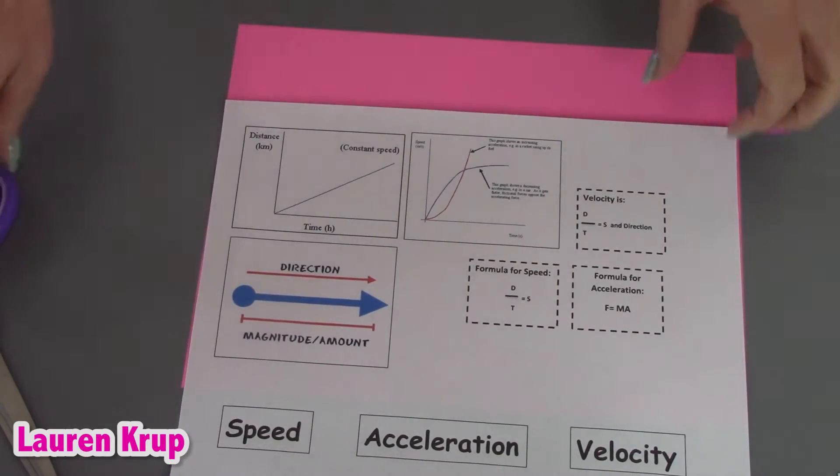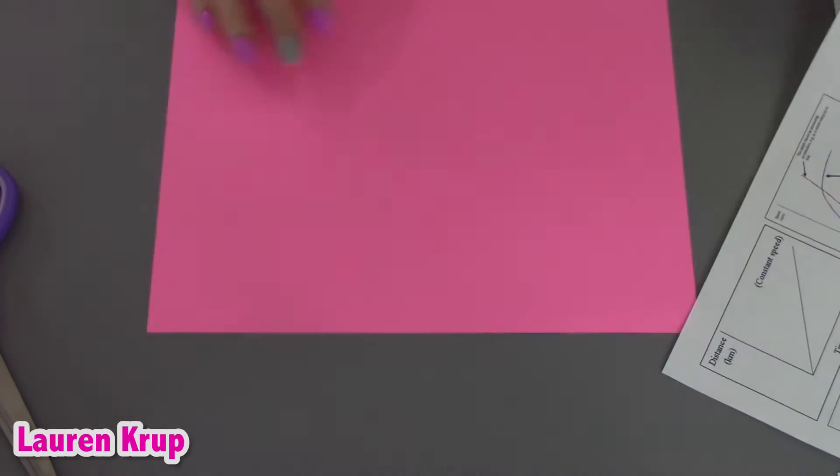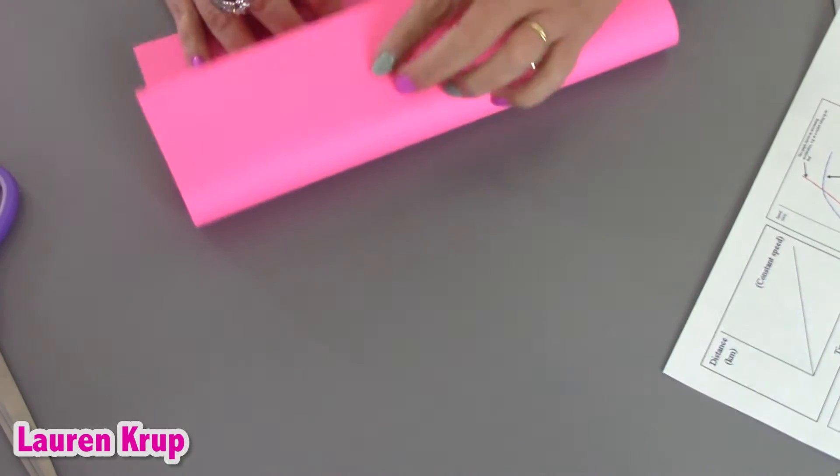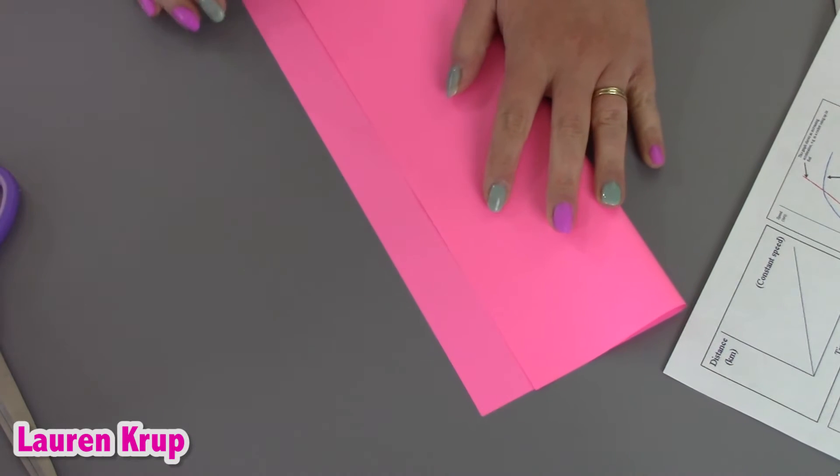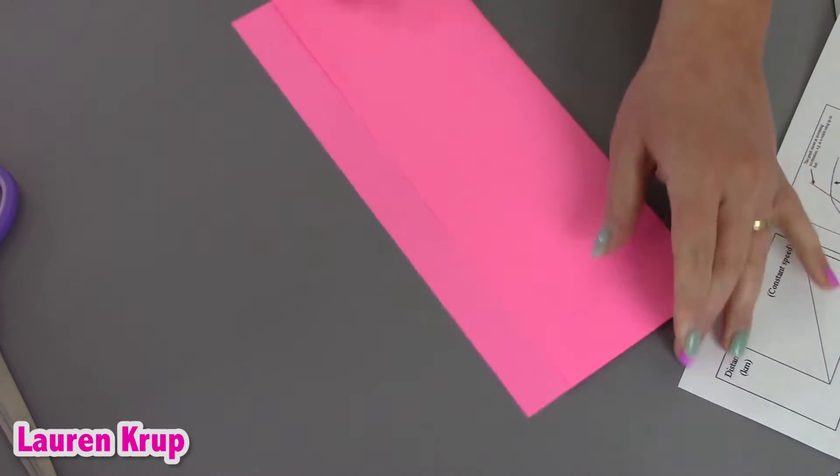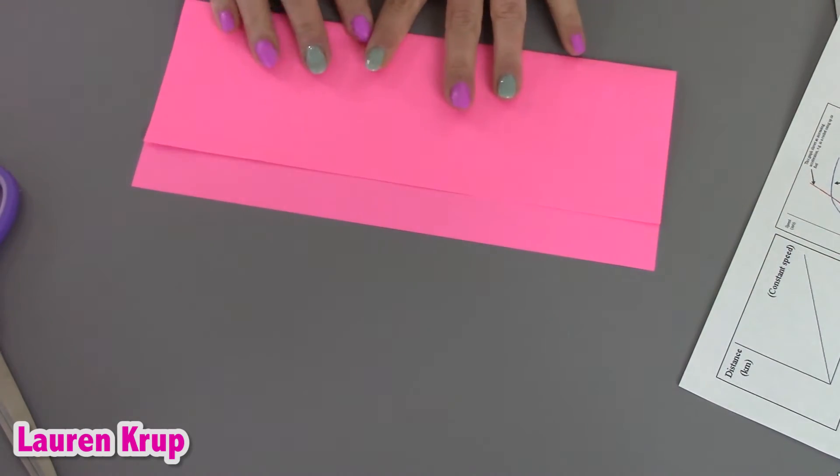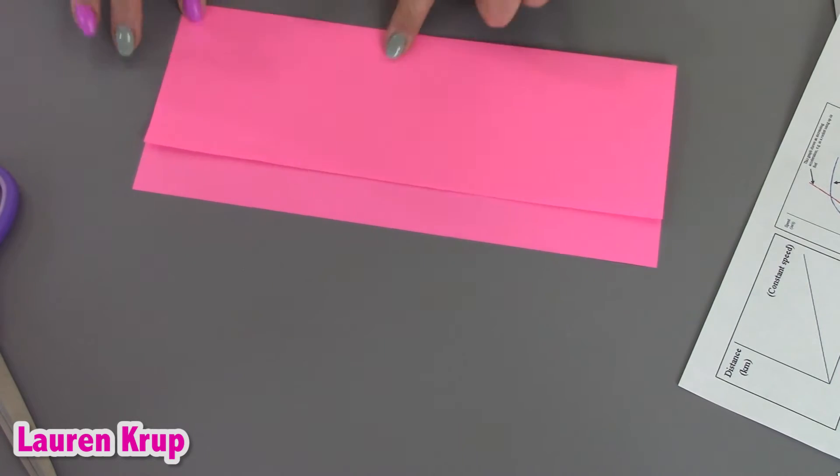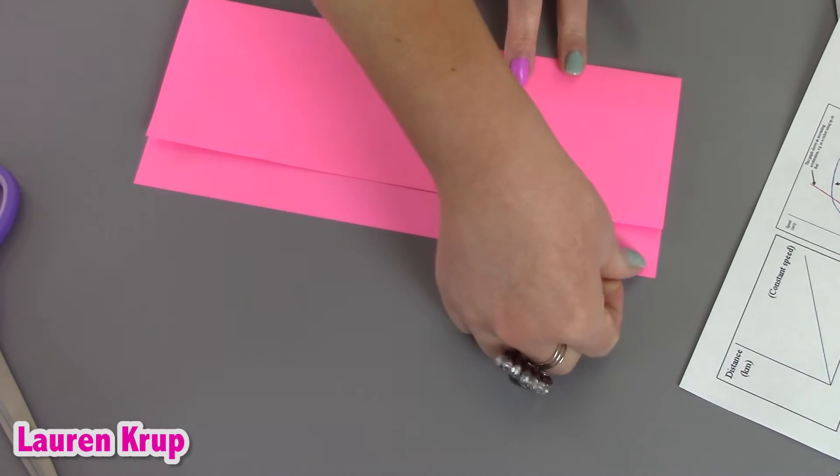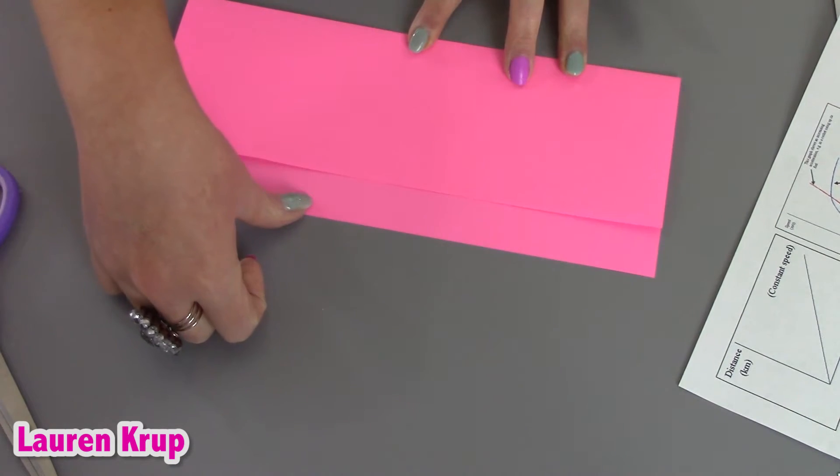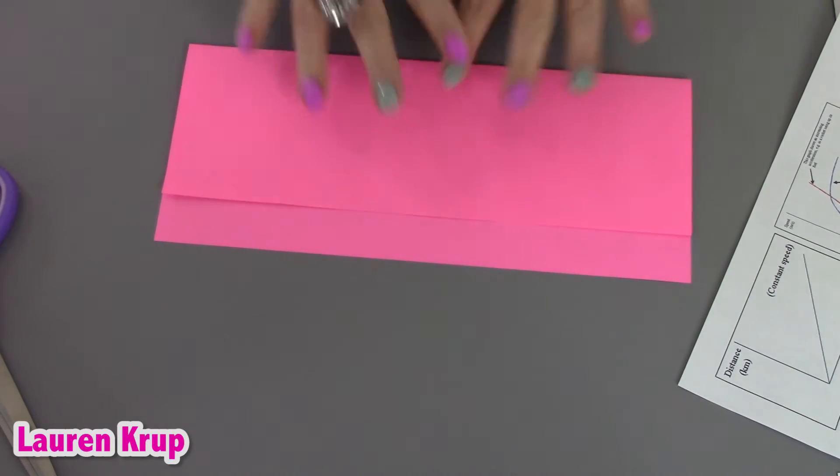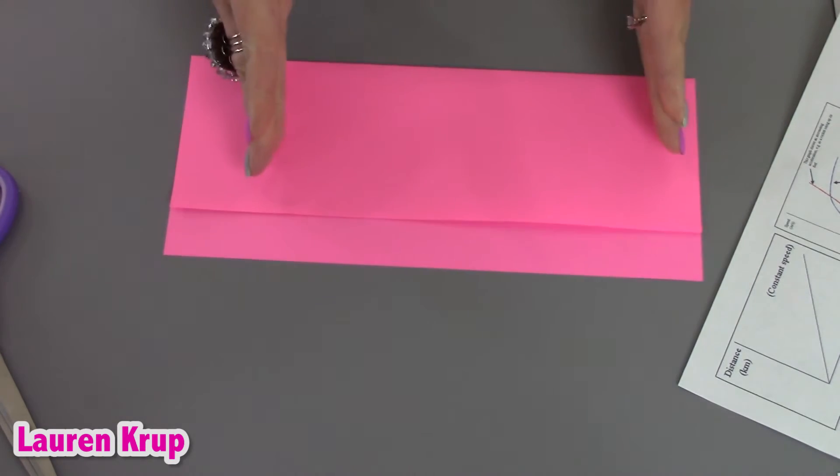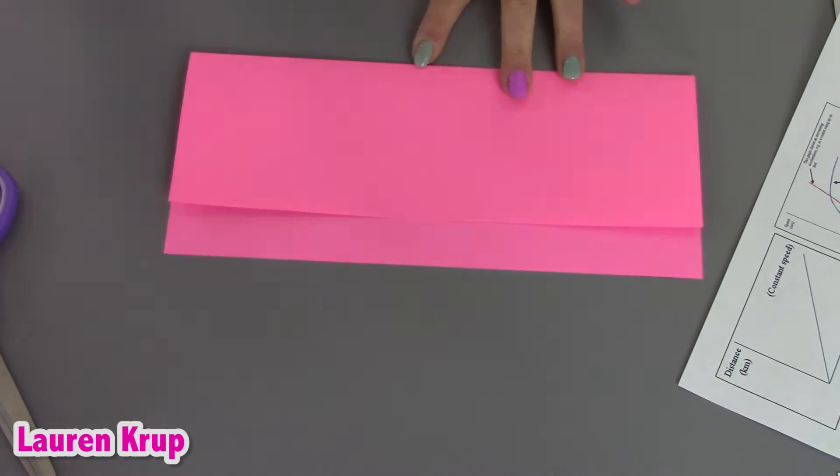All we have to do for this one is fold over like so. I always like to do this. I always like to just kind of leave, I always call it a lip, but I guess maybe it's more of a tab. So I don't fold completely over. Now you can do one of two things with that. I use this part for labels.